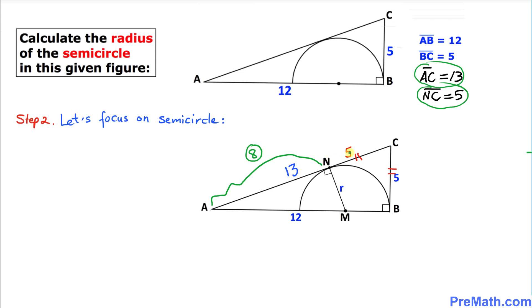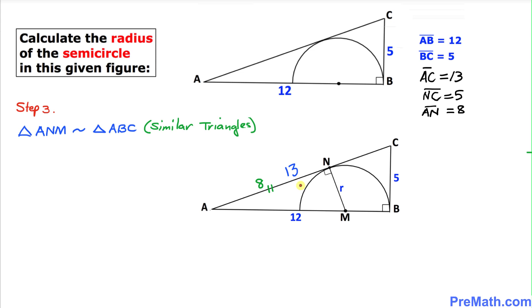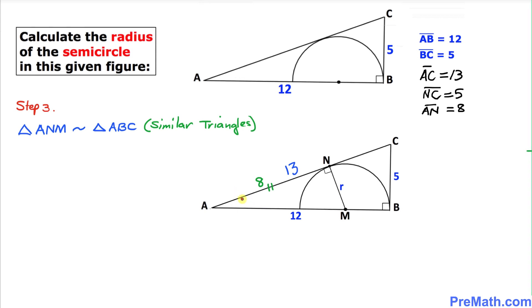13 minus 5 is 8 units, so our line segment AN equals 8 units. Here is our final step: triangle ANM is similar to triangle ABC because both of these triangles share angle A, and also angle N and angle B are the same at 90 degrees. Therefore, angle M is the same as angle C, so these two triangles are similar.